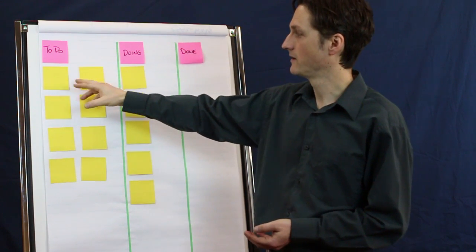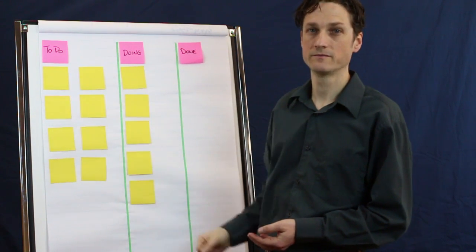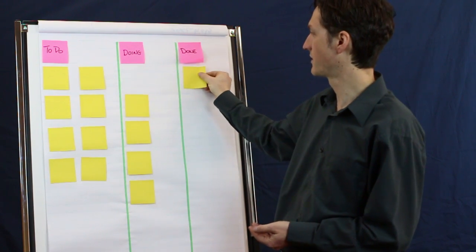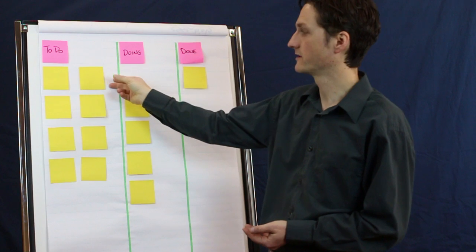Each work item is represented by one post-it, and as you do work on these things, you can just move them across to show their current status.